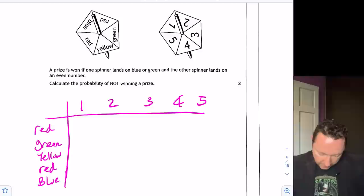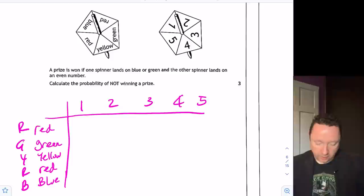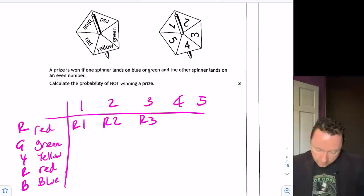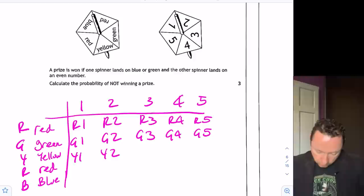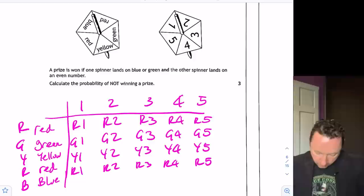So in the middle is all the chances of things happening. So we've got red and one could happen, R1, R2, red and three, red and four, red and five. Or we could go green and one, green and two, green and three, green and four, green and five. Or we could go yellow and one, yellow two, yellow three, yellow four and yellow five. Or we could get red and one, red and two, red and three, red and four, red and five. Or we could get blue and one, blue and two, blue and three, blue and four, blue and five. So that's all the things that can happen from getting two spinners.